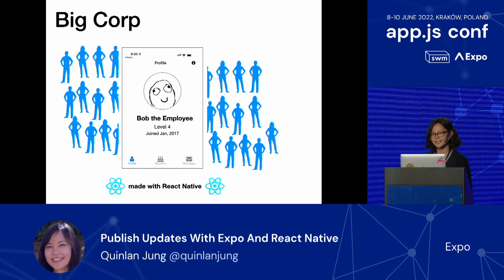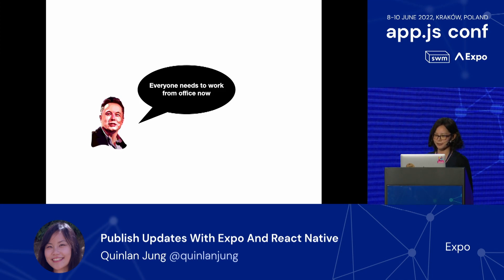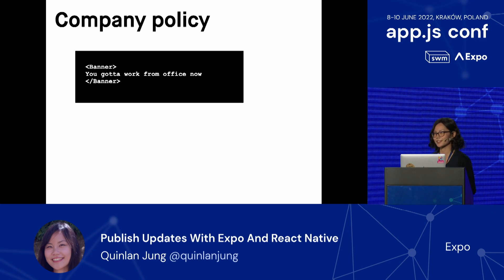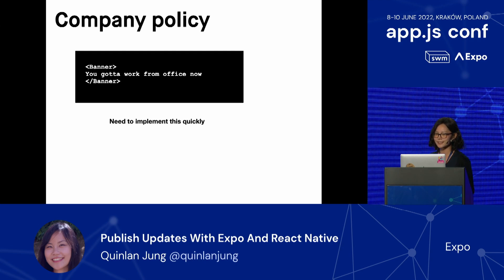Of course, as the tech lead, you've chosen to make this app with React Native. Now, imagine that one day the great leader of the big corporation makes a huge announcement — he says that everybody needs to work from the office now, and as the tech lead, you're responsible for doing something about this. Fortunately, it's really easy to implement this announcement. All you have to do is render a banner telling everybody they've got to work from the office. But while the implementation is relatively simple, getting it out to your end users is slightly harder.